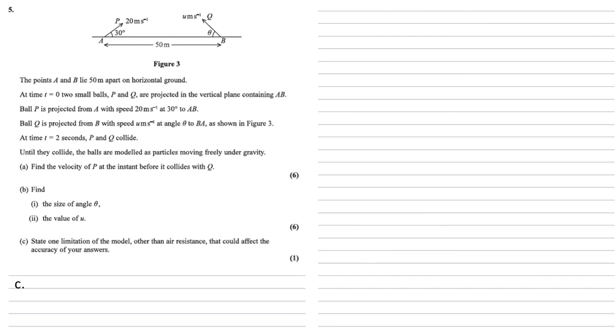For part C, we need to state one limitation of the model other than air resistance that could affect the accuracy of your answers. One easy one to go with here is that the balls are not actually particles. So in the model, they are modeled as particles. In real life, they're not. This could affect the accuracy. Again, there are loads of answers we could give for this. So the effect of the wind would be one, spin on the ball, anything like that could be an answer. We just need to pick one.